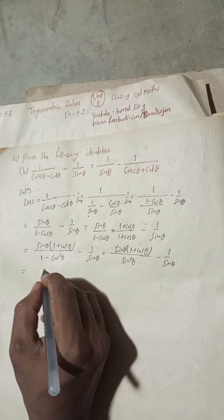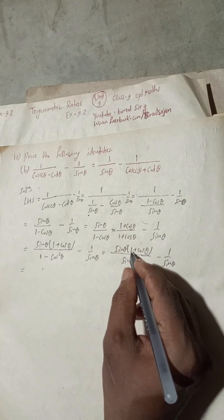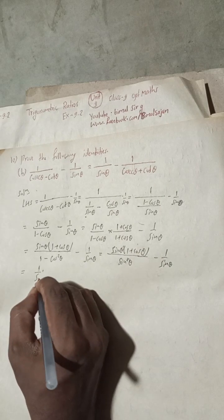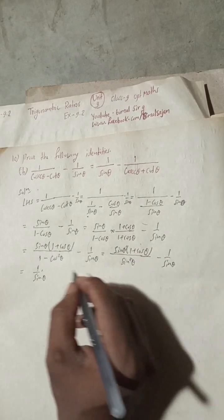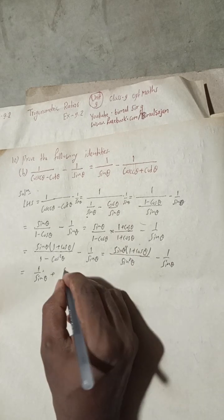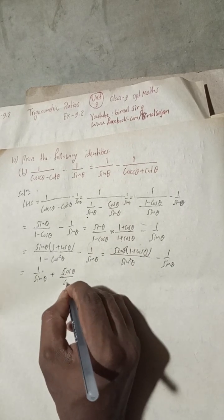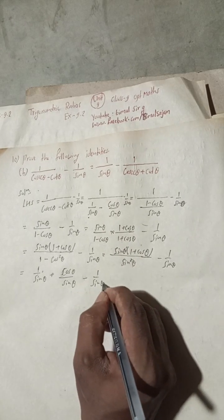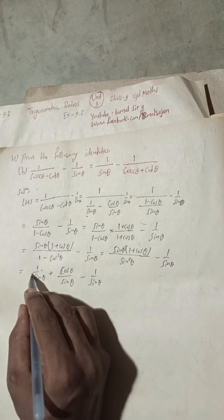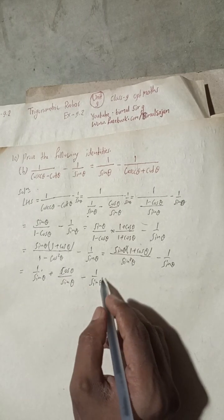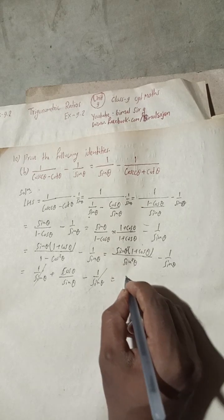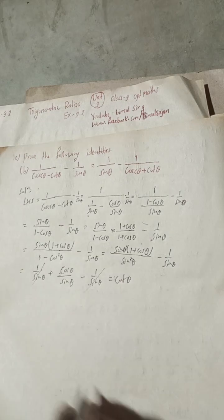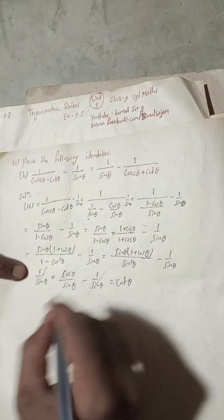Now the plus one by sine theta and minus one by sine theta cancel each other out, and we are left with cosine theta by sine theta, which equals cot theta. So LHS equals cot theta. Now we begin the RHS.